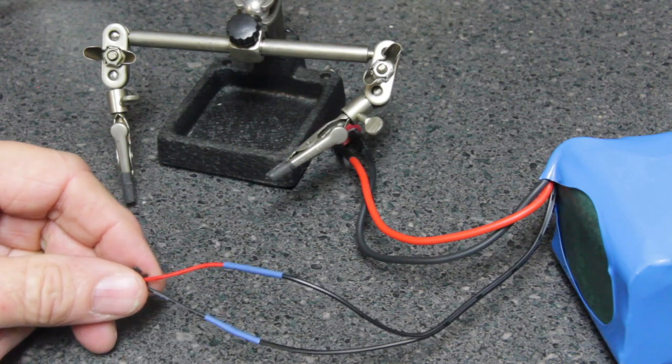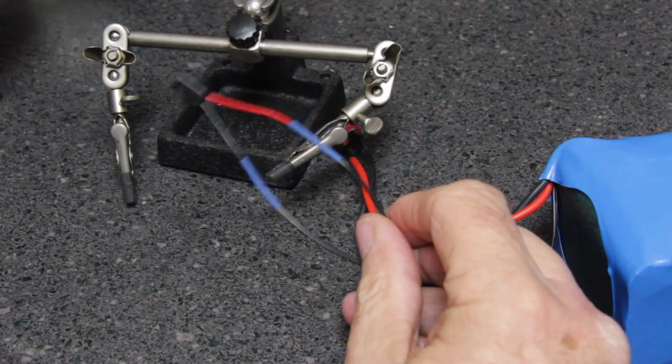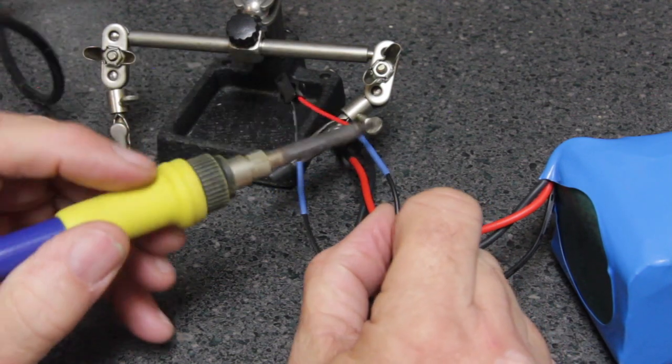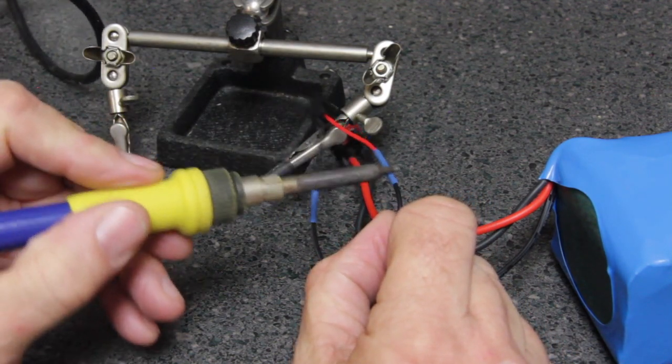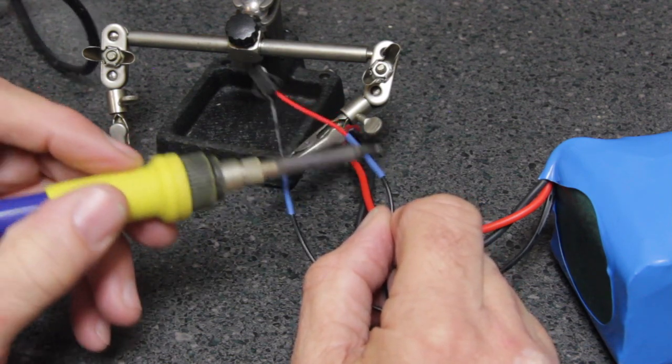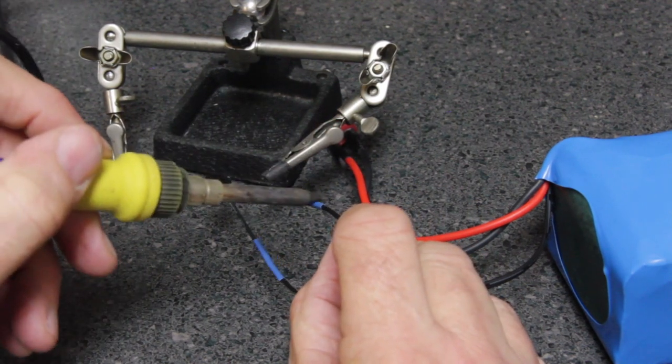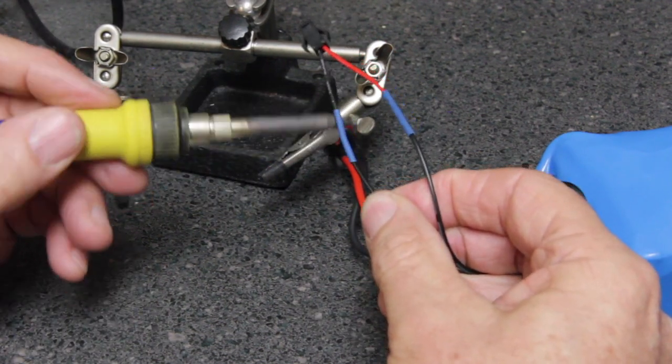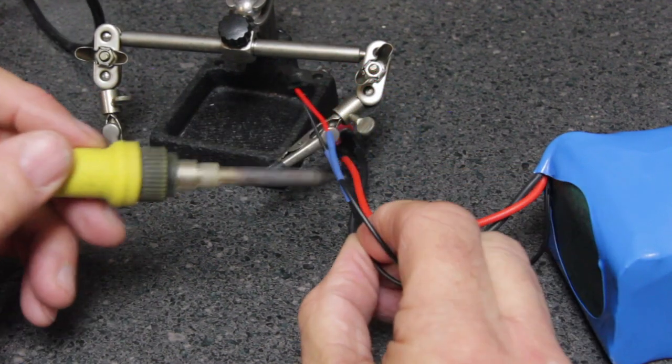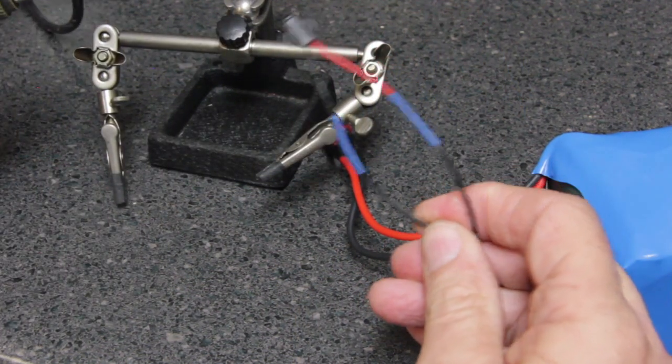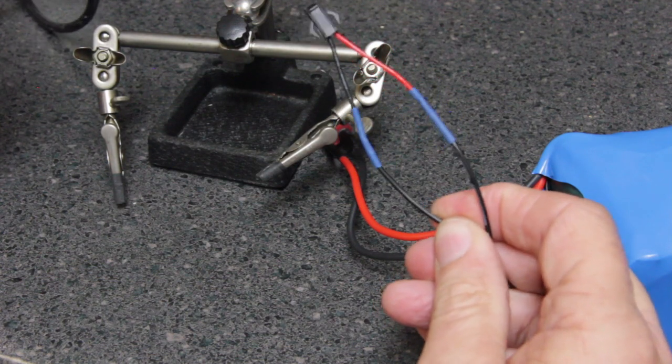Now what we want to do is take our soldering iron and we want to shrink that heat shrink tubing. The best way to do that is just take your soldering iron and gently rub the tip over the heat shrink, and that will shrink the heat shrink down over the splice.